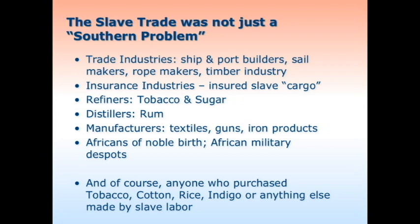The slave trade was not just a southern problem. Too often we limit the focus of slavery to the south, but it involved the entirety of the colonies — the shipbuilding, port building, sailmakers, ropemakers, the timber industry, anyone who built or supplied anything that went on a slave ship. It involved insurance industries in the north who insured slave cargo, refiners of tobacco and sugar used to trade for slaves in Africa, distillers, rum makers, textiles, guns, and iron products.